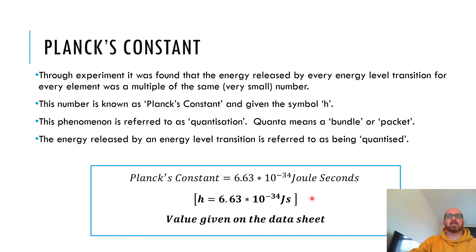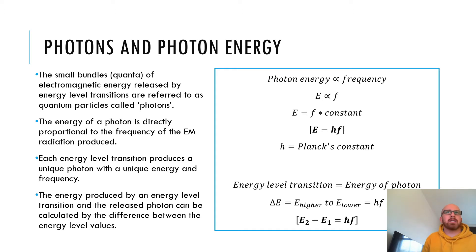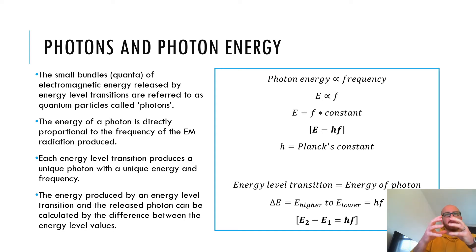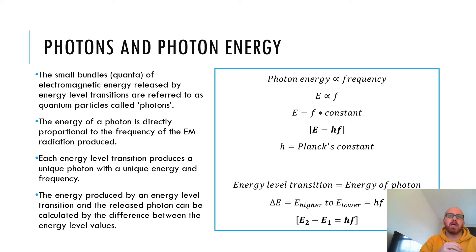Planck's constant is 6.63 × 10⁻³⁴ joule-seconds — you're given that on the data sheet. How we're going to use it is to work out the energy of a photon and the energy released through an energy level transition. The small bundles or quanta of electromagnetic energy released by energy level transitions are referred to as quantum particles called photons. This little packet of energy released when an electron drops from a higher to lower energy level is referred to as a photon, and it behaves a bit like a particle.